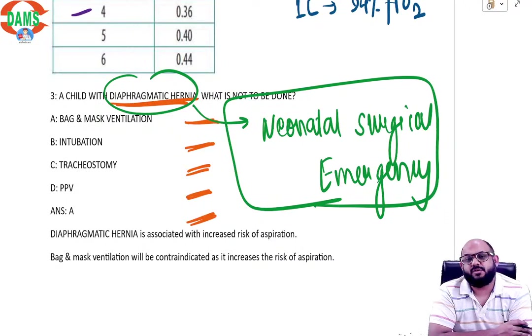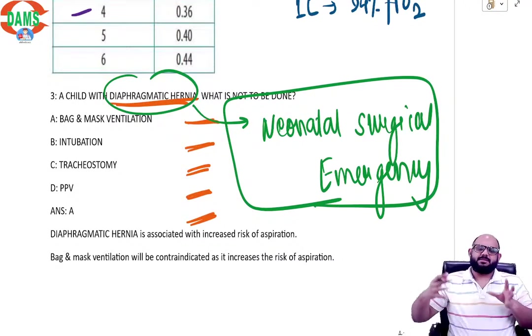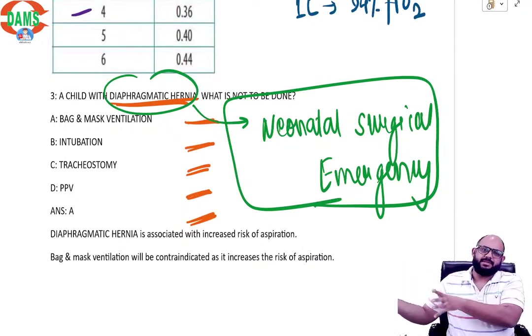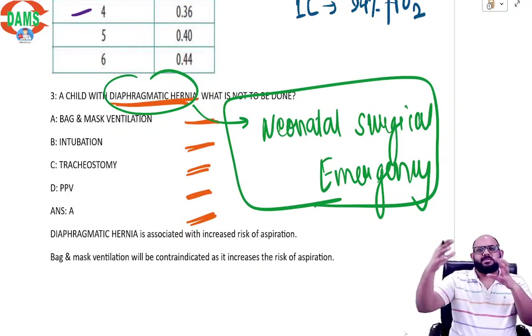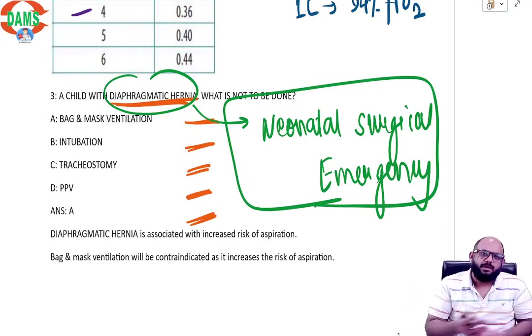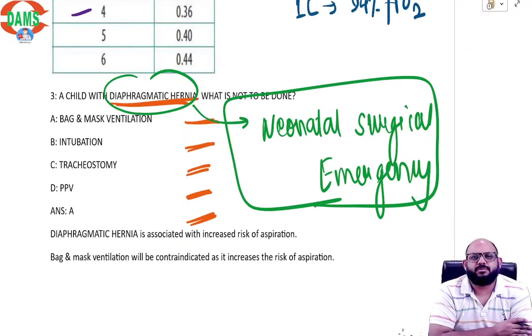One, there is always a risk of aspiration. And second is because as the gas will keep on increasing in the stomach, it will keep on inflating the intestine. The intestines in the mediastinum will keep on compressing the lung. The more the patient goes down and down and down on oxygen, the more you try to ventilate the patient.